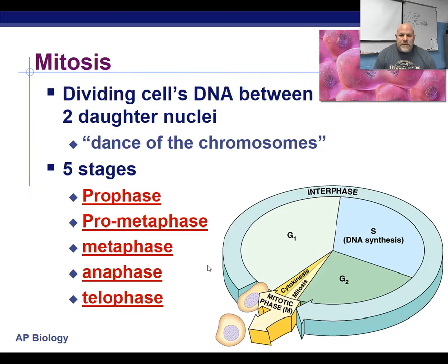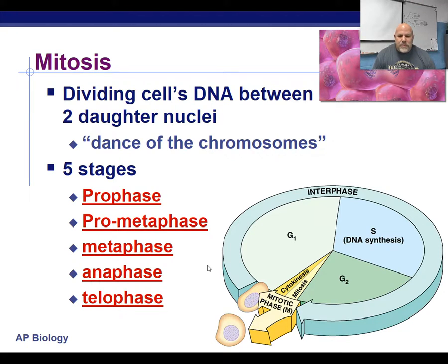Mitosis is going to be the actual dividing up of the chromosomes and the nucleus so that we're ready for cell division. When we get to mitosis, that's when the chromosomes become visible. We'll talk about mitosis in the next video.